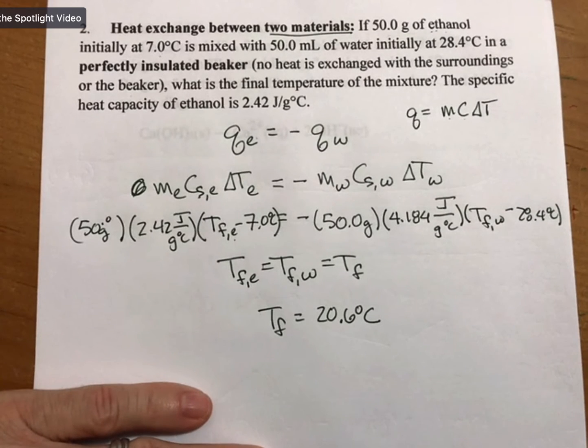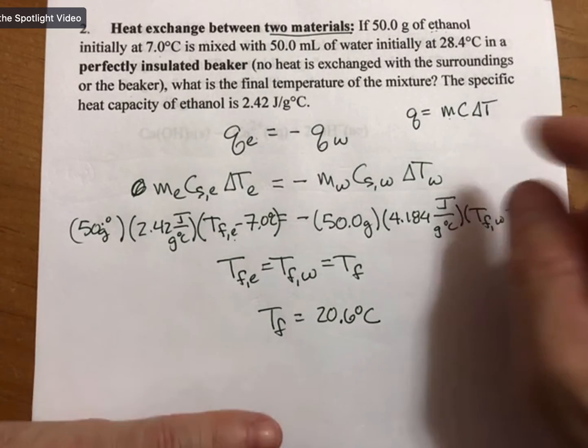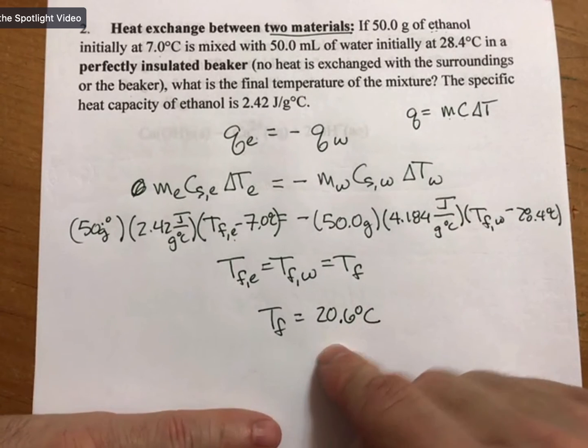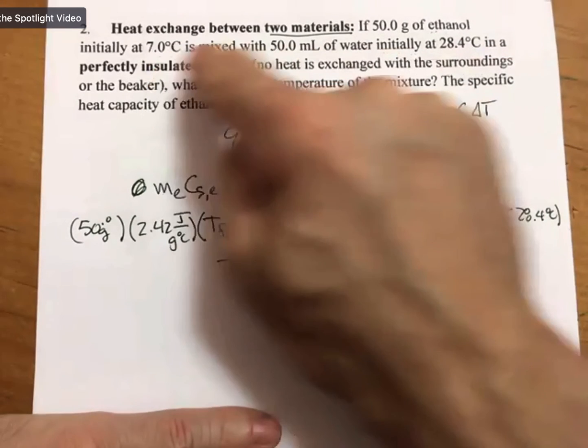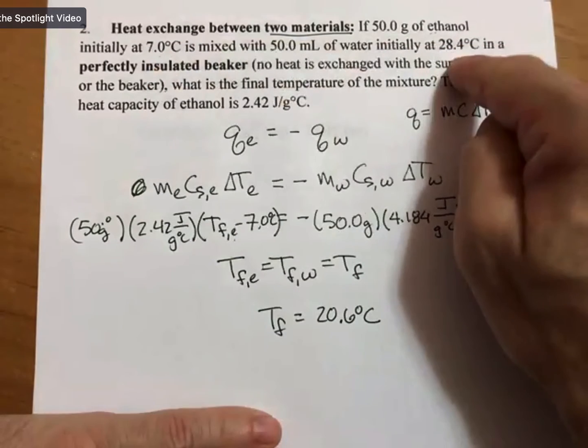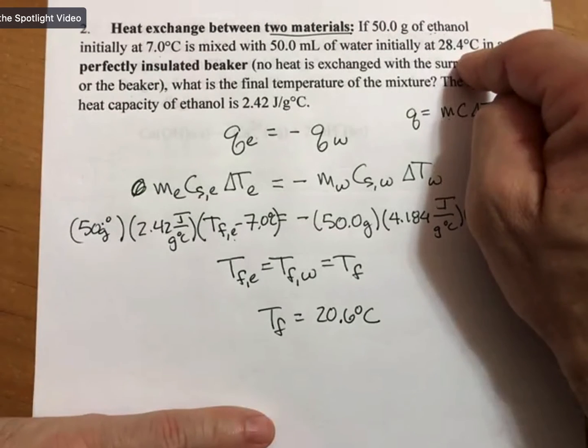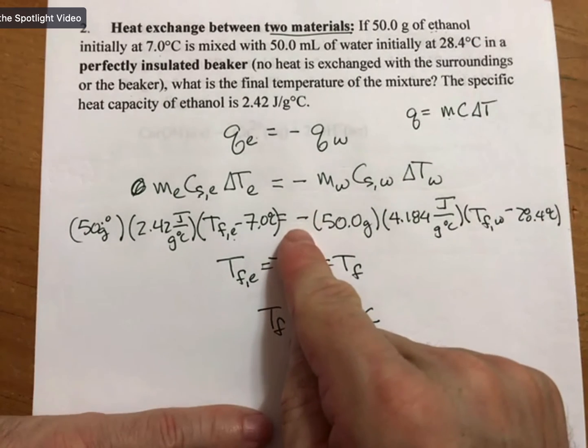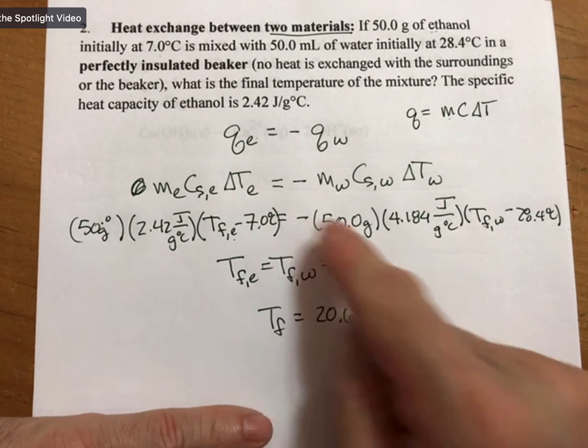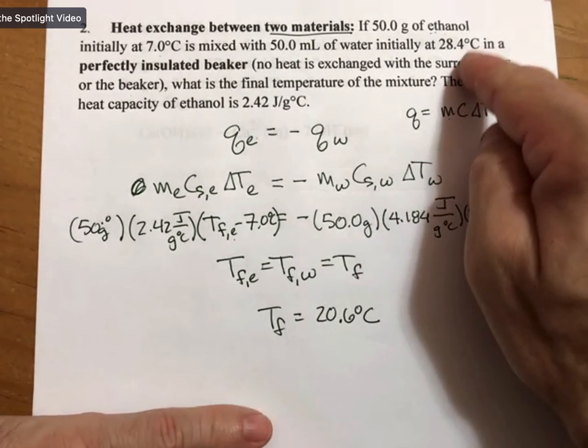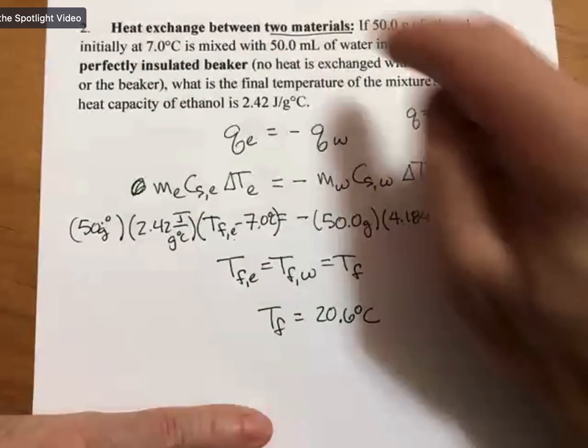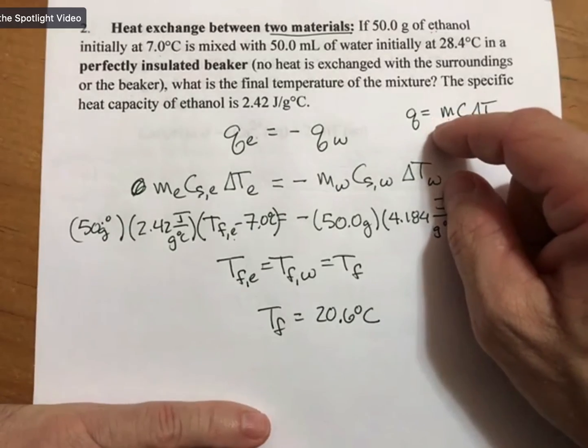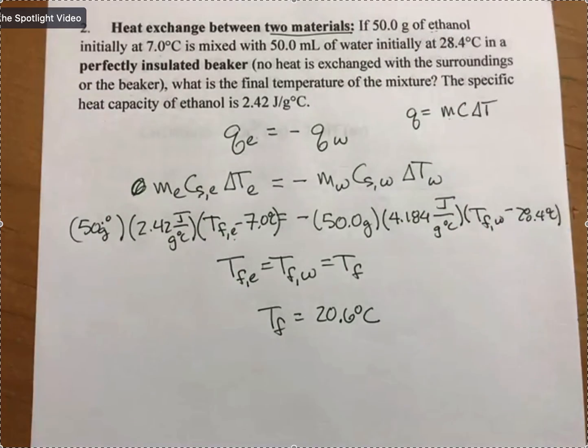I will remind you that your final temperature must be between your two initial temperatures, because one is cooling down and one is heating up and they end up between it. And if you forget this minus sign, you can get a number that's above 28 or below 7, so just be careful of that.